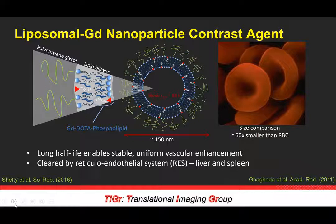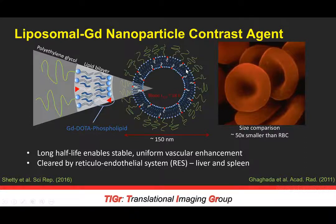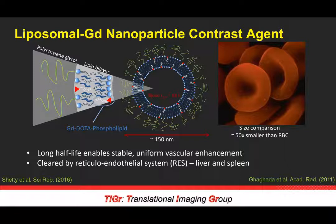This is a liposomal gadolinium nanoparticle contrast agent. You can see the molecular diagram on the screen with gadolinium — doterum specifically — chelated within a lipid bilayer on the outer ring. The reason we've conjugated the gadolinium within a lipid bilayer is that it enables a long half-life and stable uniform vascular enhancement. The half-life in blood for this agent is approximately 18 hours, which gives ample time for imaging the vasculature or any other feature of interest.